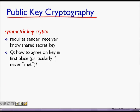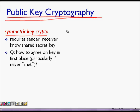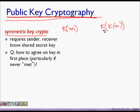In this lecture we are going to learn about public key cryptography. Till now we have learned about symmetric key cryptography. In symmetric key, if we have a message m, we encrypt it with the same key and at the receiver end he also decrypts it with the same key. When you apply the same key twice you get the original message.